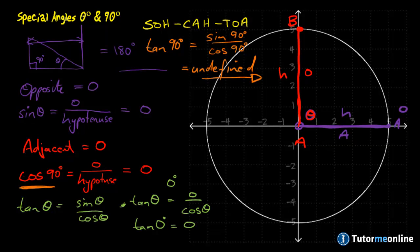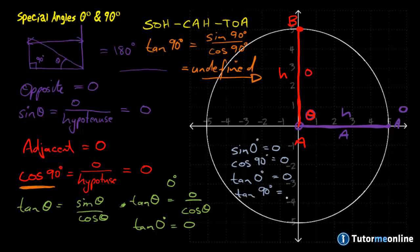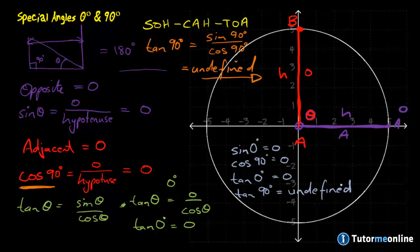To summarize: the sine of zero degrees equals zero, the cosine of 90 degrees equals zero, the tangent of zero degrees equals zero, and the tangent of 90 degrees is equal to an undefined value, because you cannot divide by zero.